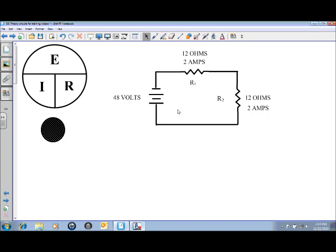The one before that we calculated the total resistance. We combined R1 and R2 and we found the total opposition of current flow, and we used the total voltage and with those two, applying Ohm's law, we found the total current flow.